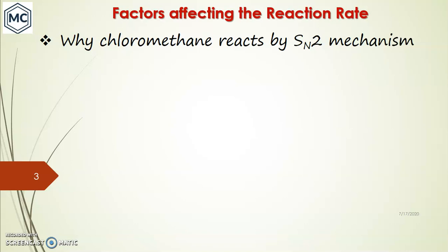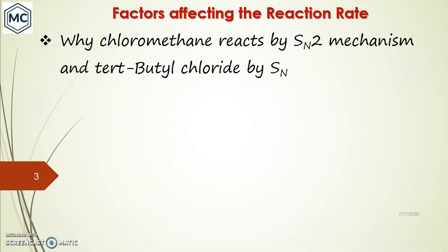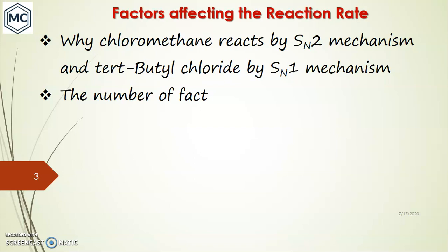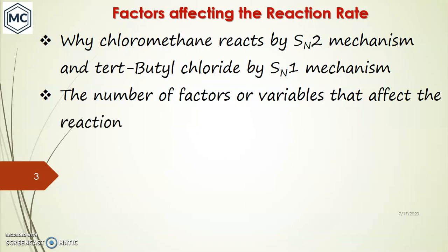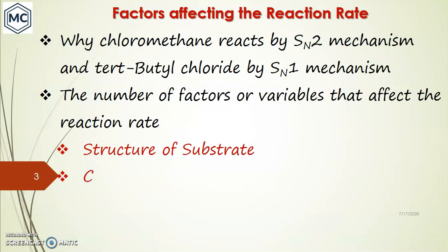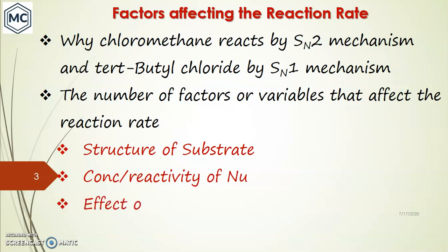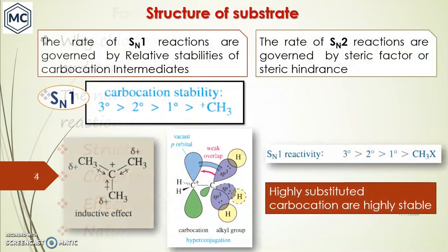So I would like to ask: why does chloromethane react by SN2 mechanism and tertiary butyl halide by SN1 mechanism? There are a number of factors or variables that affect the normal reaction rate. These are: (1) structure of substrate, (2) concentration or reactivity of nucleophile, (3) effect of solvent, and (4) nature of leaving group.